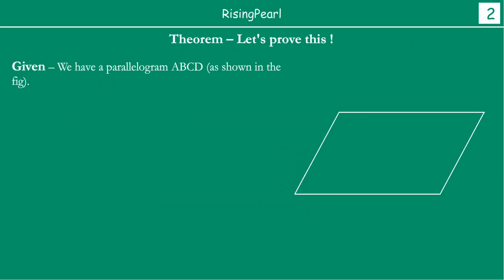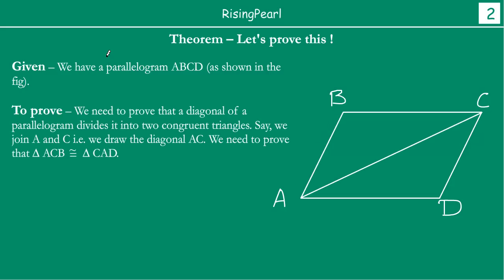We start by noting that we have a parallelogram ABCD as shown in the figure. We want to write what we have to prove. We need to prove that a diagonal of a parallelogram divides it into two congruent triangles. We have drawn AC as a diagonal, and we have to prove that triangle ACB is congruent to triangle CAD. That is what we have to now prove.